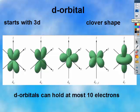The D orbital is clover shaped. And D orbitals can hold ten electrons because there's five orbitals.